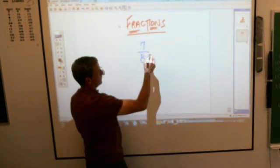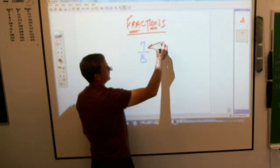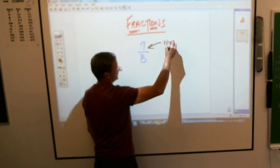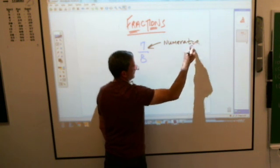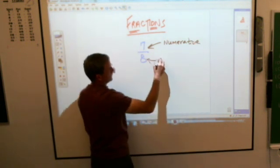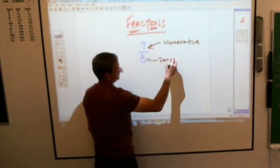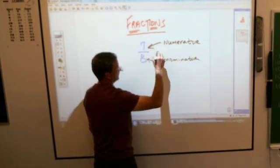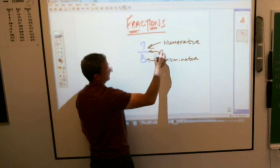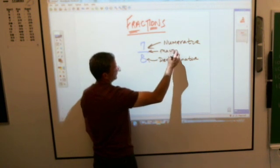When you have a fraction, the top number is called the numerator, and the bottom number is the denominator. And it's separated by that thing called the fraction bar, fraction line, whatever you want to call it.